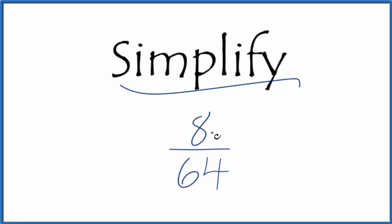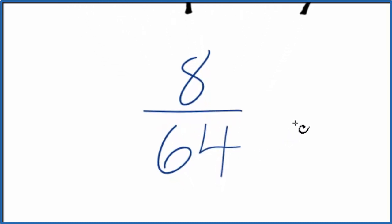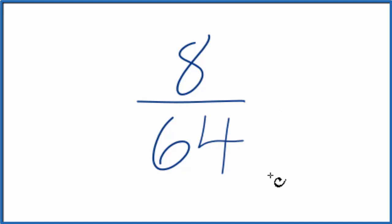Let's simplify the fraction 8/64. We want to find a fraction that's equivalent, has the same value, but has different numerators and denominators. So we need to find a common factor.